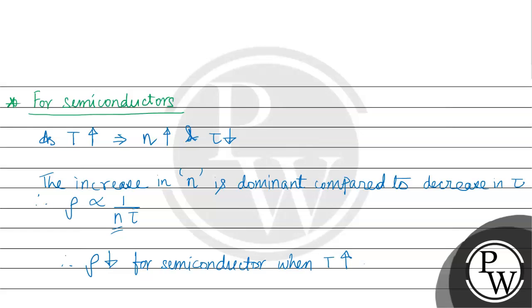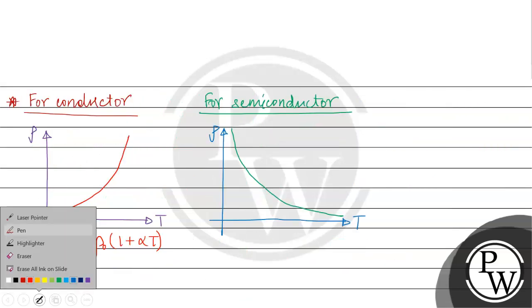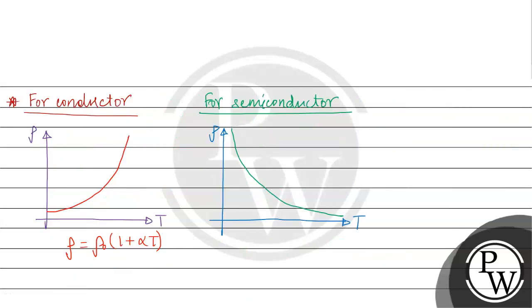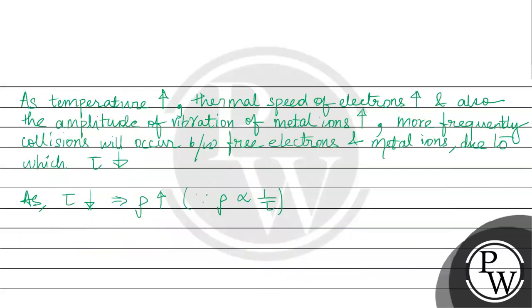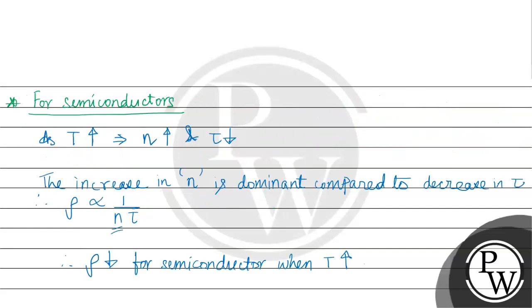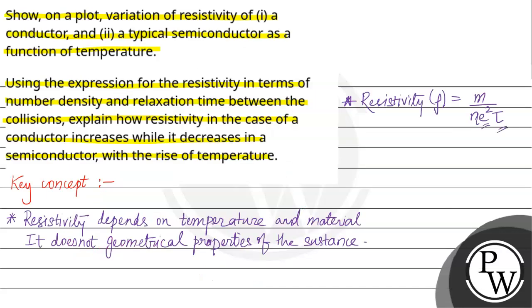So this is the answer. The final answer for the first part is the graph showing rho vs T, and the final answer for the second part: for a conductor, resistivity increases with temperature, and for a semiconductor, resistivity decreases with temperature. Hope you understand it well.